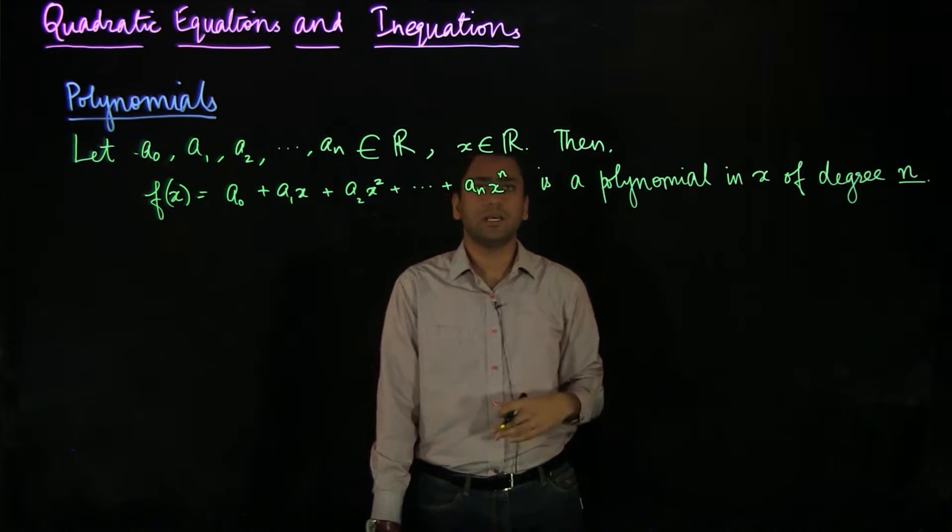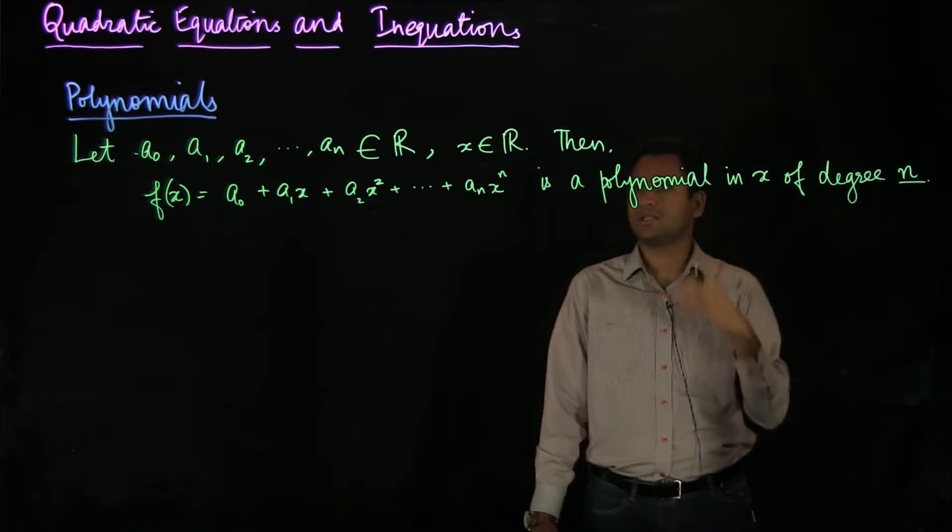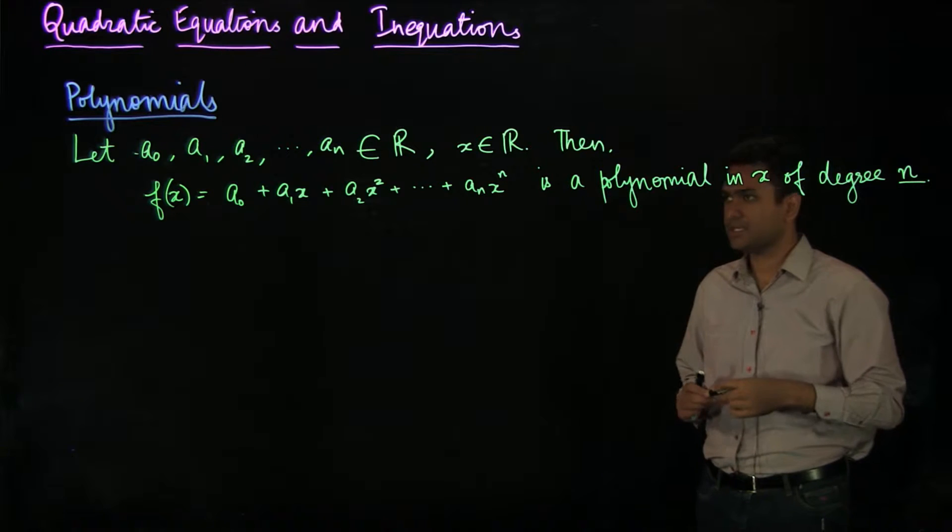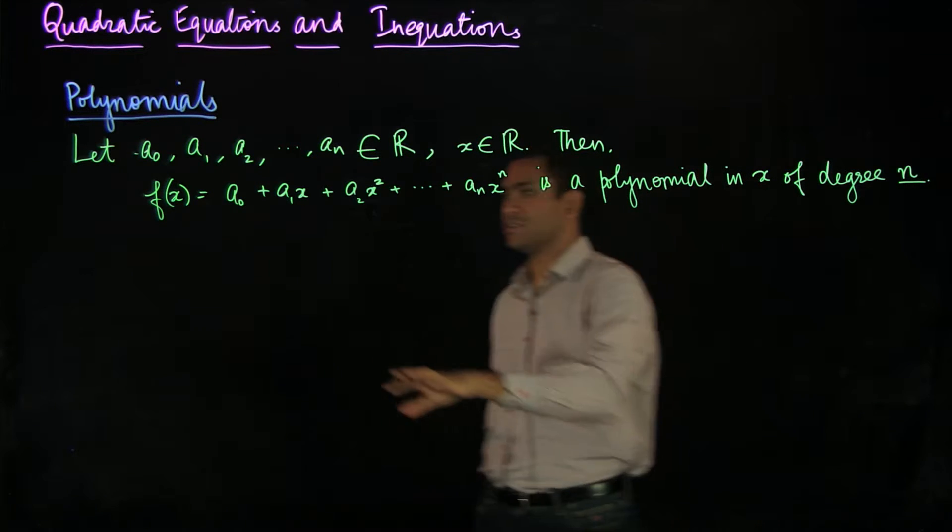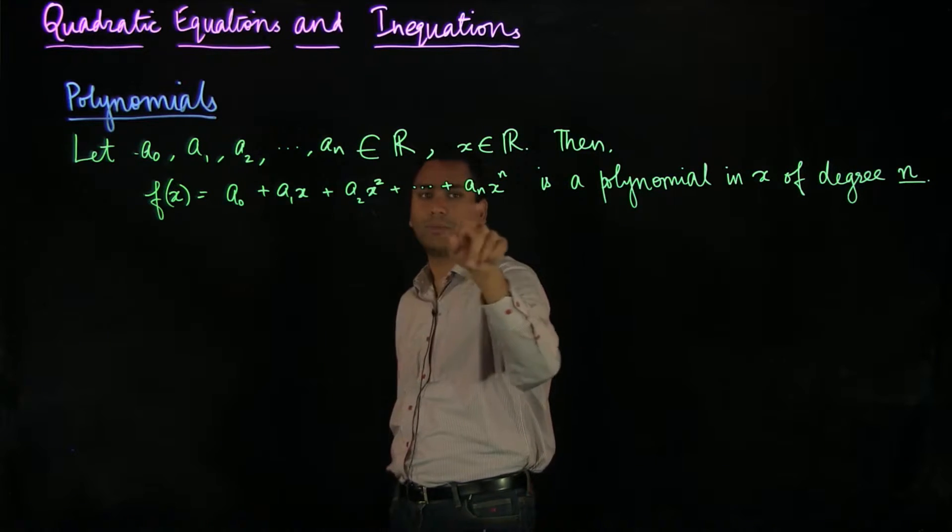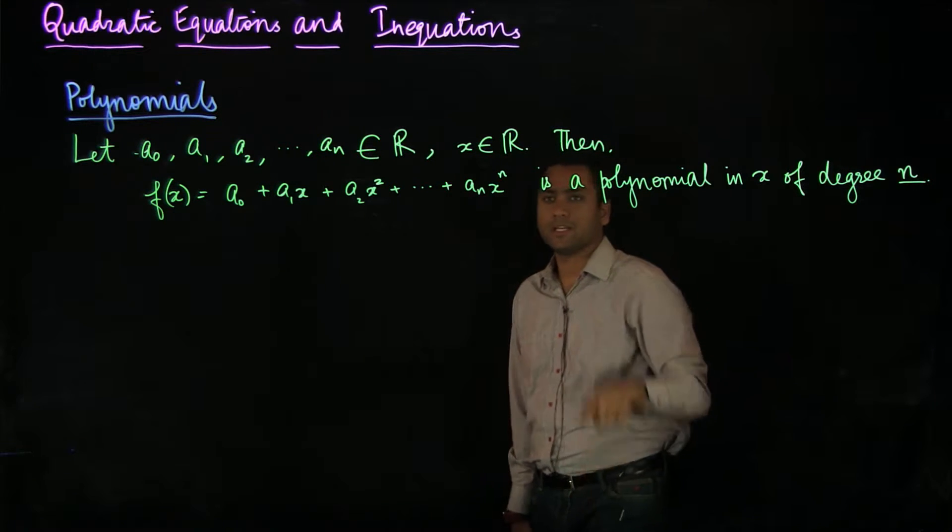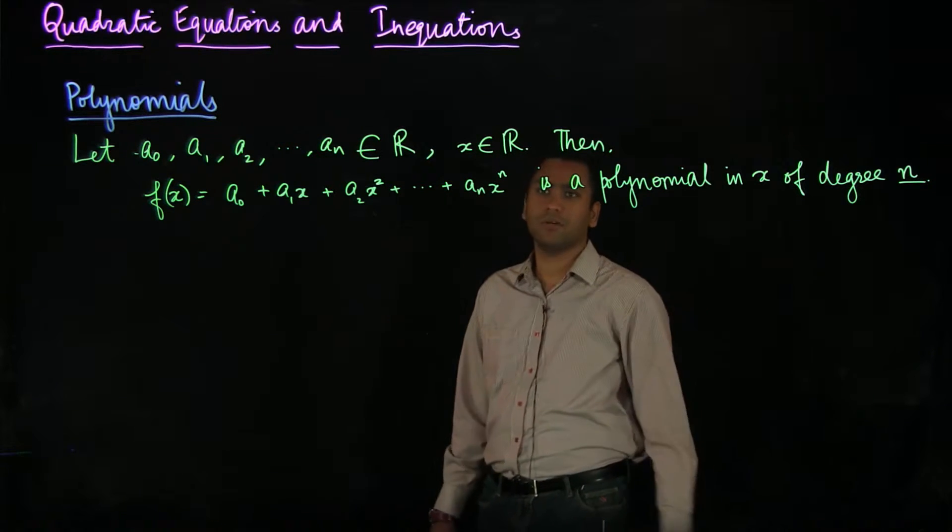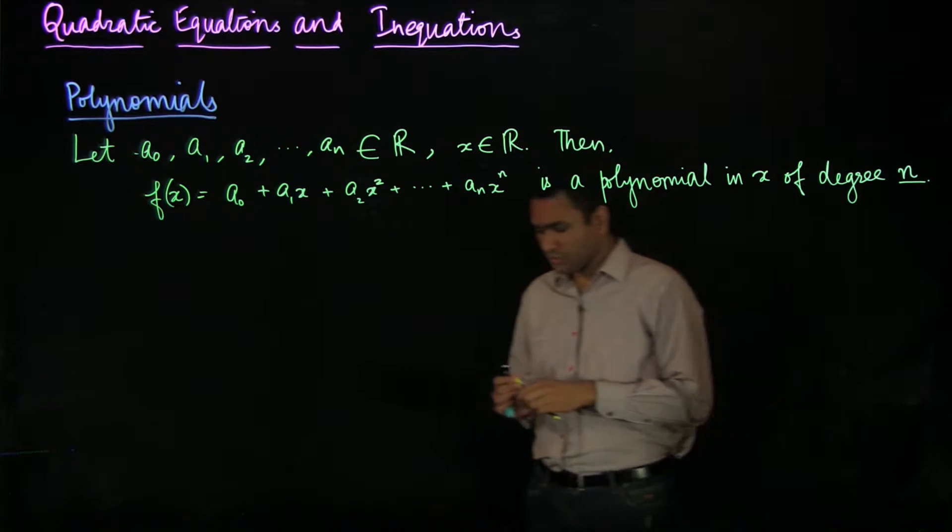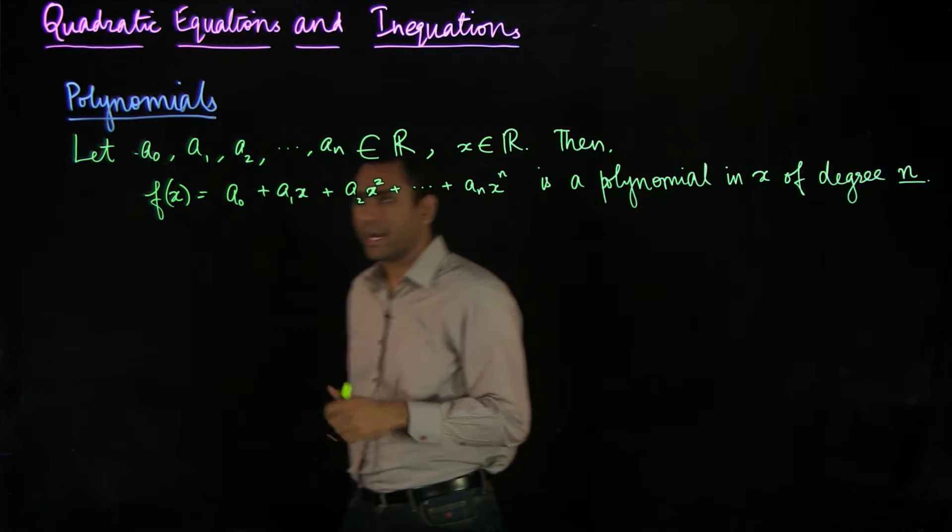What is this degree n? The degree n is the largest exponent of x in the polynomial. You can see that there is a0, a1, a2 up to an and an is the coefficient of the term x to the n and that is why n which is the highest power is the degree of the polynomial. There are a few things you need to keep in mind.